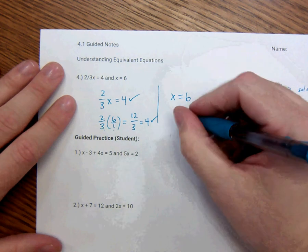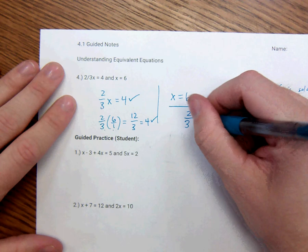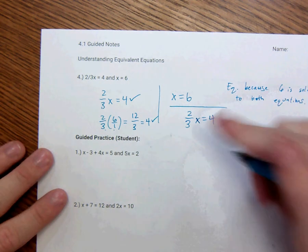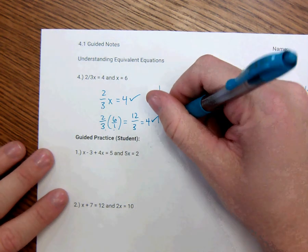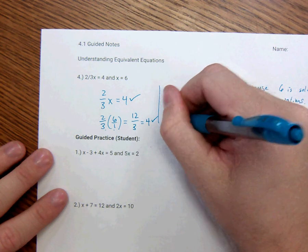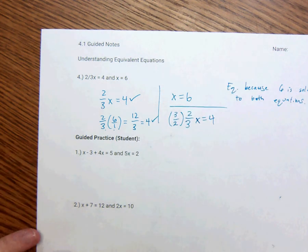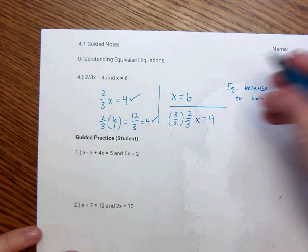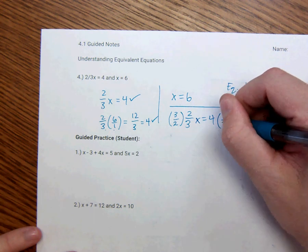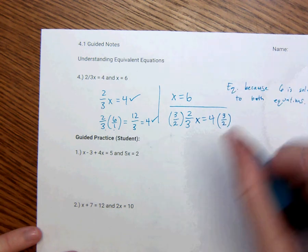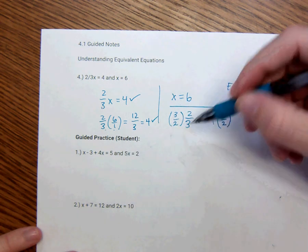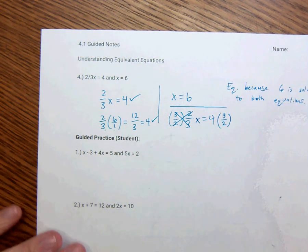Let's talk about a different way. So say we had 2 thirds x is equal to 4. Now I want to isolate the variable. Now anytime you have a fraction like this in front of your variable, this is how you get rid of it. You multiply by what's called the reciprocal. And that is just a fancy word for the reverse. Or the upside down. Think of it as the upside down, those of you who watch Stranger Things. It's the upside down of the fraction. It's not necessarily a bad thing though. It's actually really nice. So I'm going to multiply this by 3 over 2.